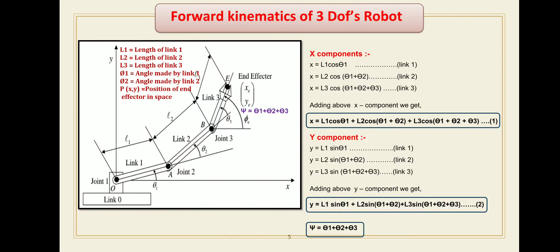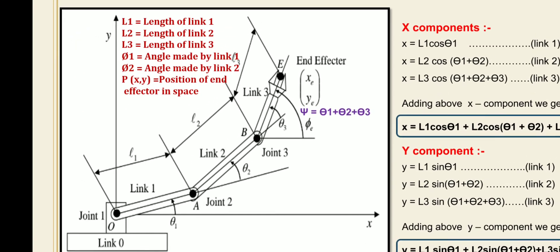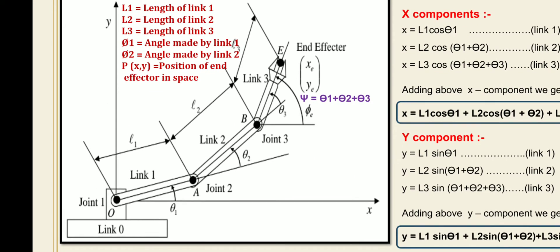We will continue with the forward kinematics equation for a three degrees of freedom robot. This figure shows exactly the kinematics of a three-link robot. Forward kinematics is the process to get coordinates of the end effector from given angles of all joints. In the previous lecture we already discussed forward kinematics for a two degrees of freedom robot.